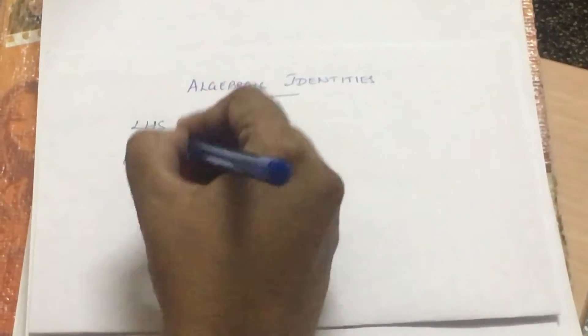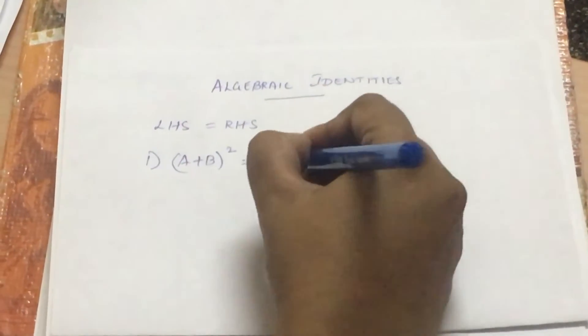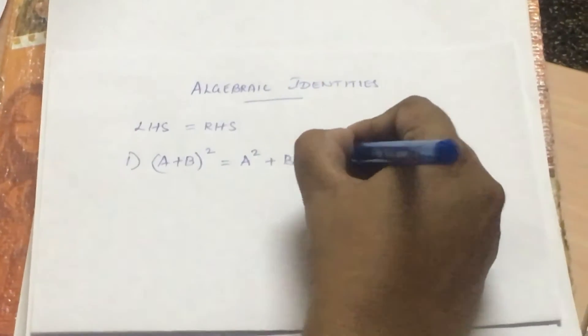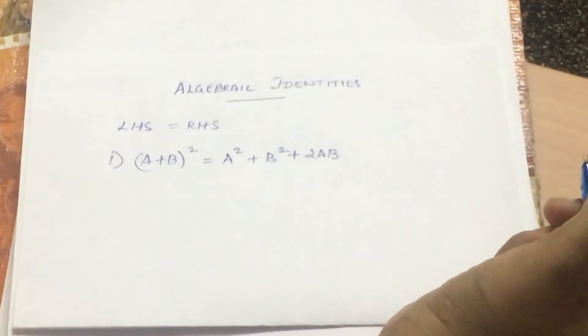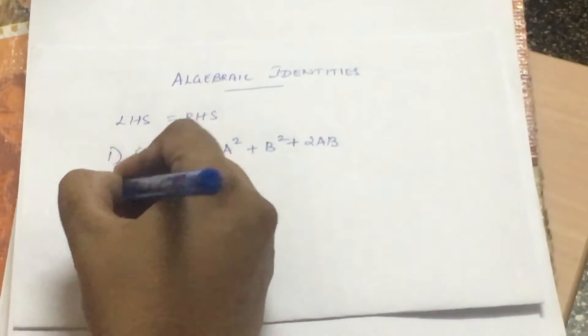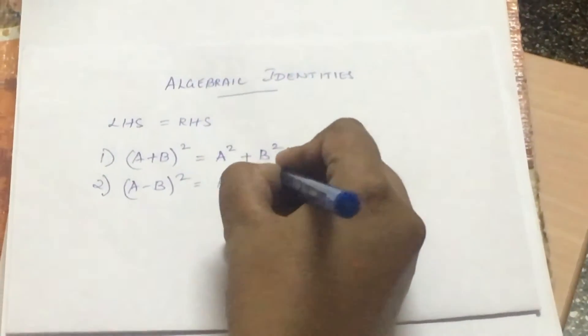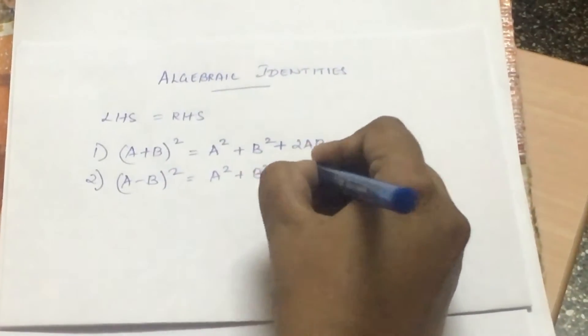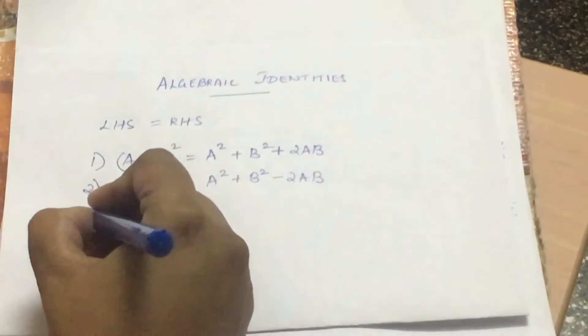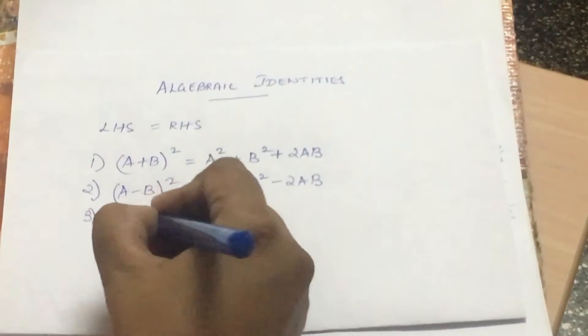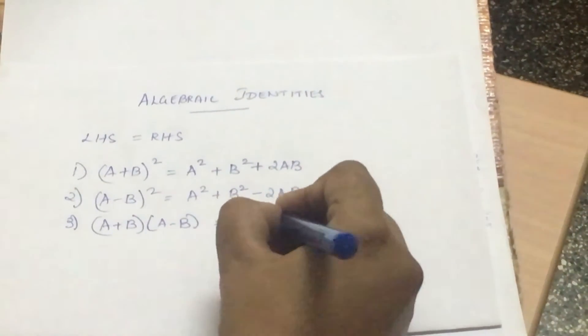The first identity which we are going to be learning is (a+b)² and that is equal to a² + b² + 2ab. Before I explain, let me write the others as well. Second is (a-b)² and that is also the same as the previous, except that here it is a minus. So it is a² + b² - 2ab.